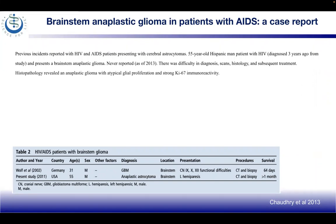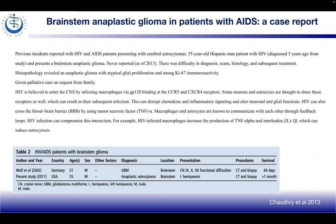Histopathology revealed the anaplastic glioma and atypical glial proliferation, as well as strong Ki-67 immunoreactivity. Palliative care was provided at the family's request. It is believed that HIV enters the CNS by infecting macrophages or T-cells via gp120 binding to CCR5 and CXCR4 receptors. Some neurons and astrocytes are thought to share these receptors, which can result in subsequent infection, disrupting chemokine and inflammatory signaling and altering neuronal and glial functions.